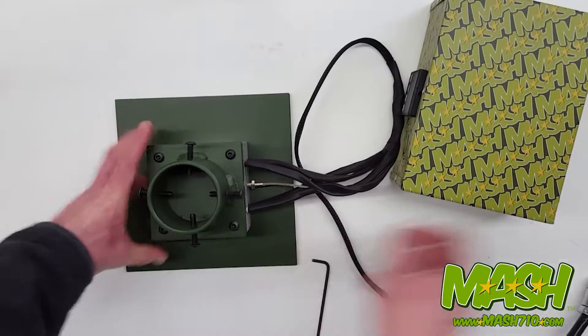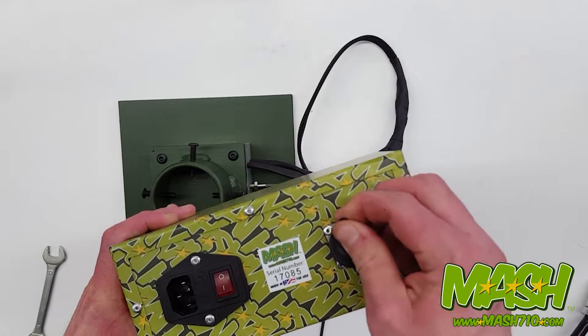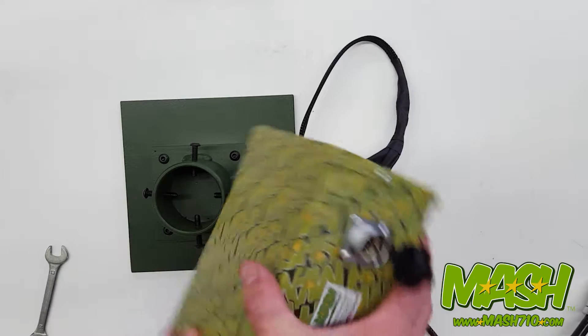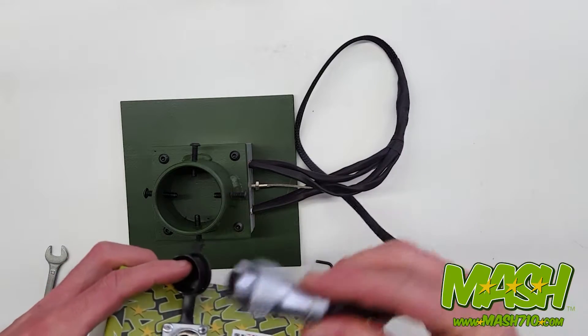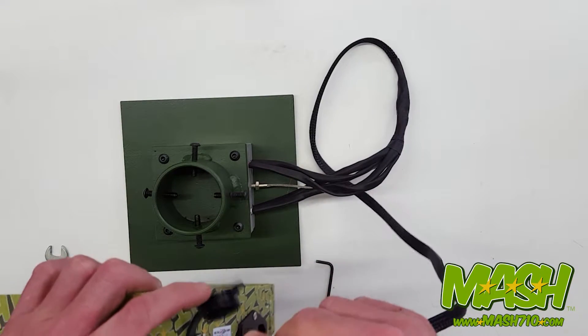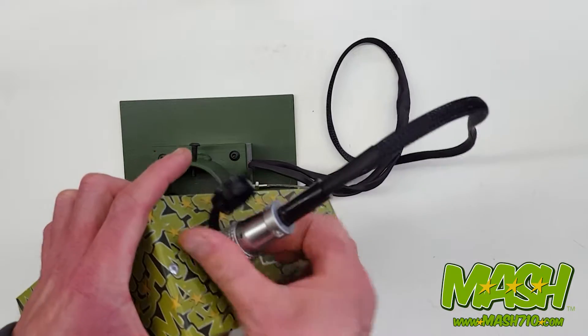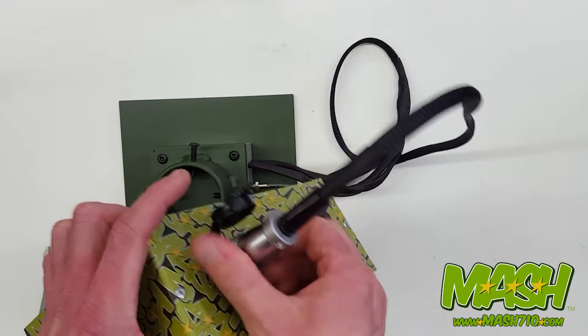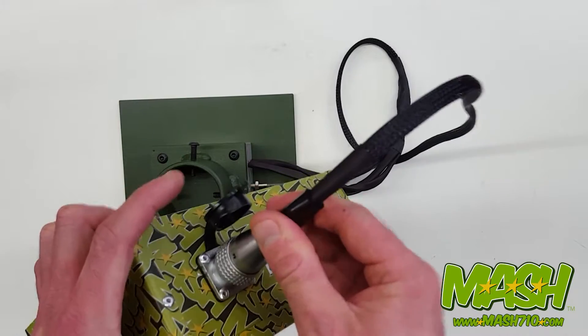Now we just need to plug it into the controller. Here's our controller box, pull this little plastic thing out of the way, take this end, line up the tabs, push it in, screw it down, nice and tight, make sure it's in there.